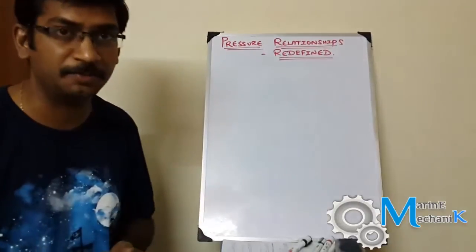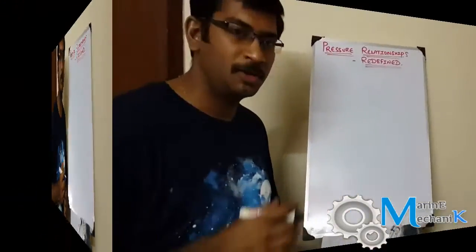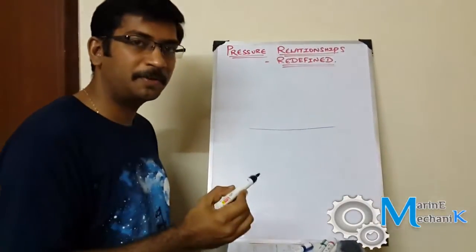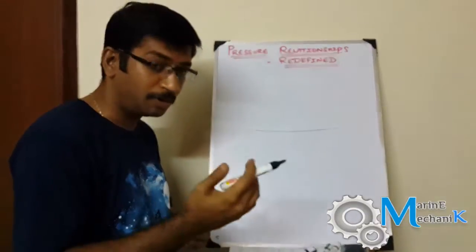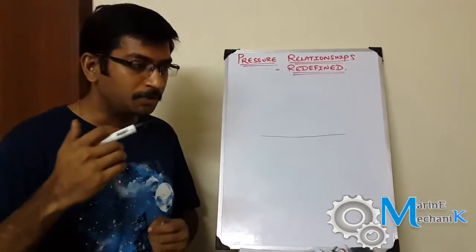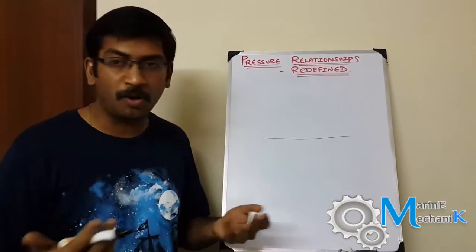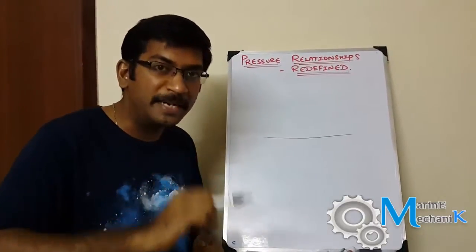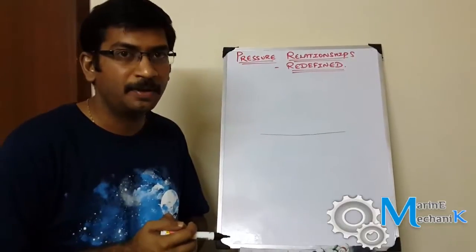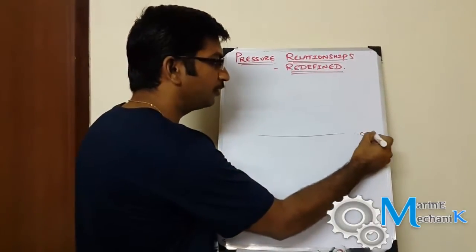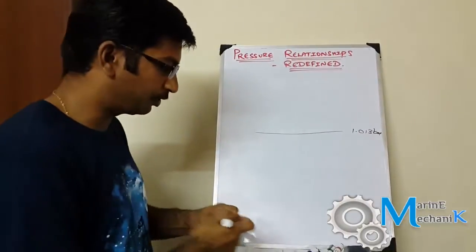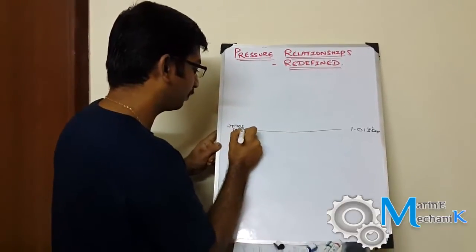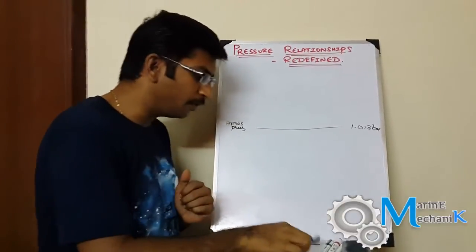In this video we are going to redefine and relearn these pressure relationships. To start, let's draw a line representing atmospheric pressure. Atmospheric pressure is the pressure of the air in the surrounding — more precisely, the pressure measured at mean sea level. Its rough value is 1.013 bar. I'll mark it as atmospheric pressure here.